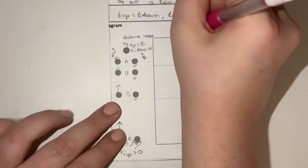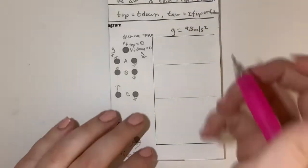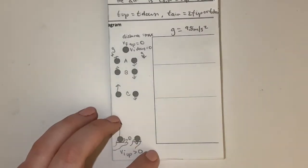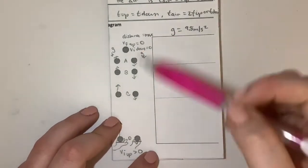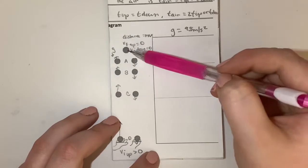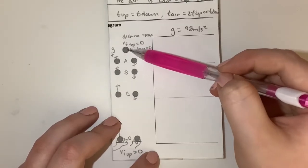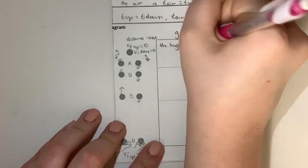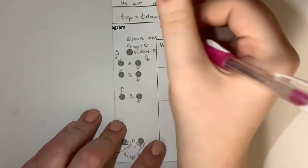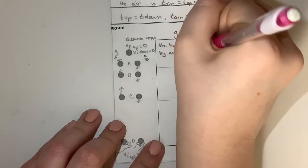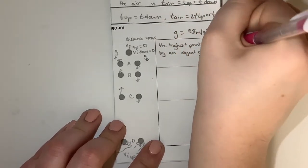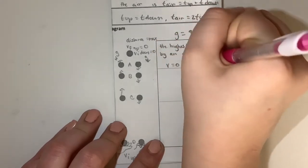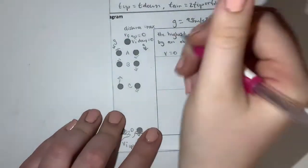Gravity is going to equal 9.8 meters per second squared. In these boxes we're going to fill in some information. The final velocity at the highest point always equals zero, and the distance equals max — so that's the maximum height reached by the object going up.